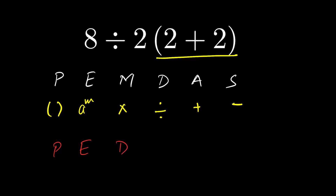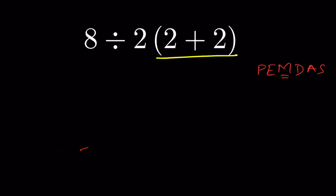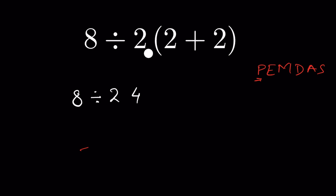Say you are following PEMDAS. As per PEMDAS we solve the parenthesis first, so we write the other operations as they are — 8 divided by 2 — then 2 plus 2 is 4, so we write 4. Once that operation is done we can remove the parenthesis.